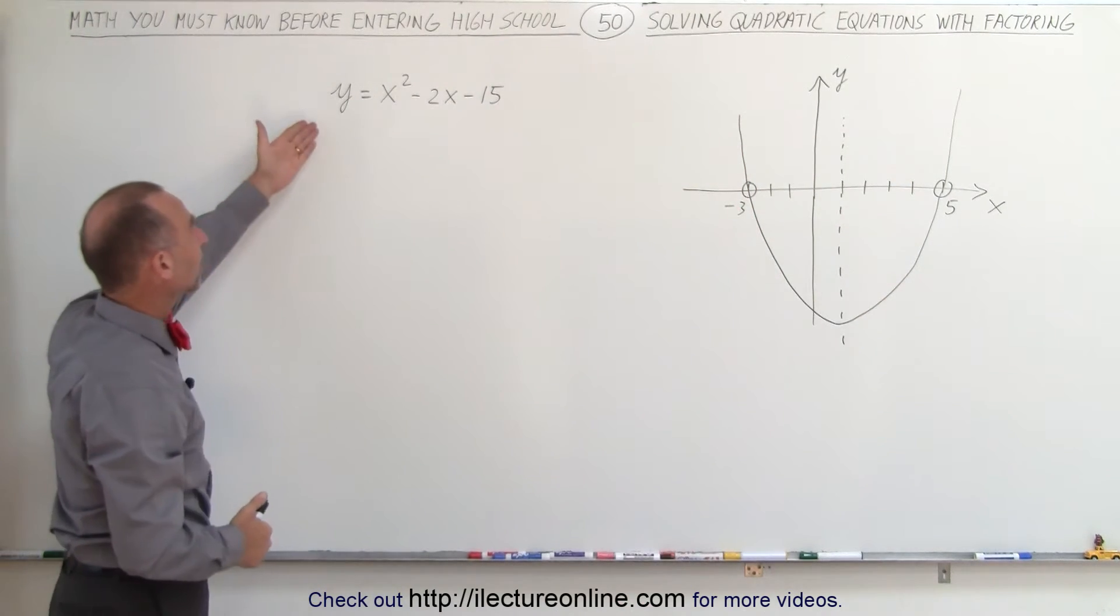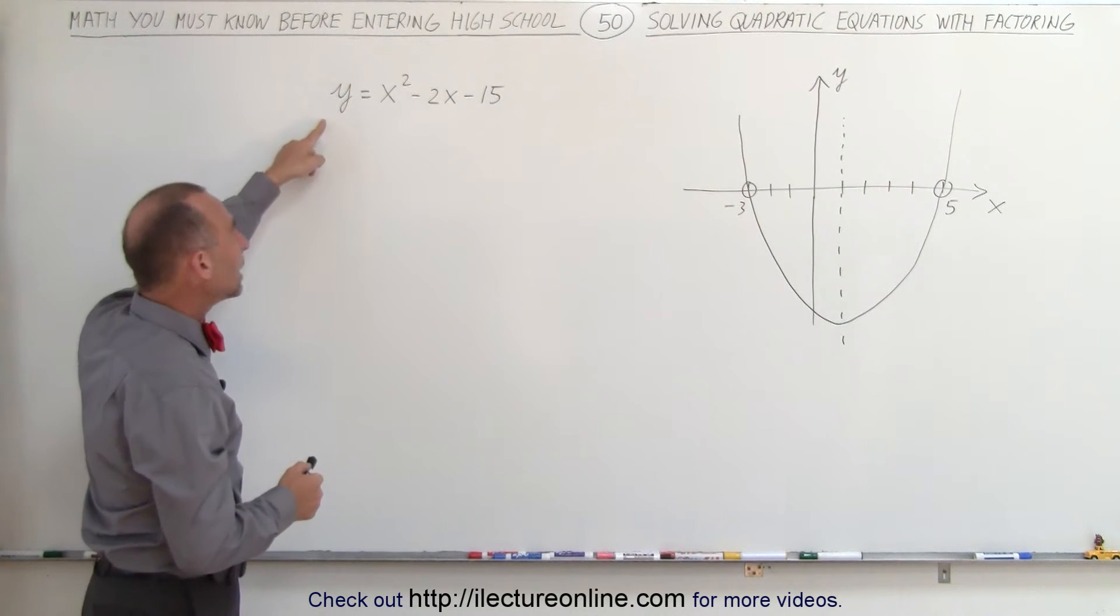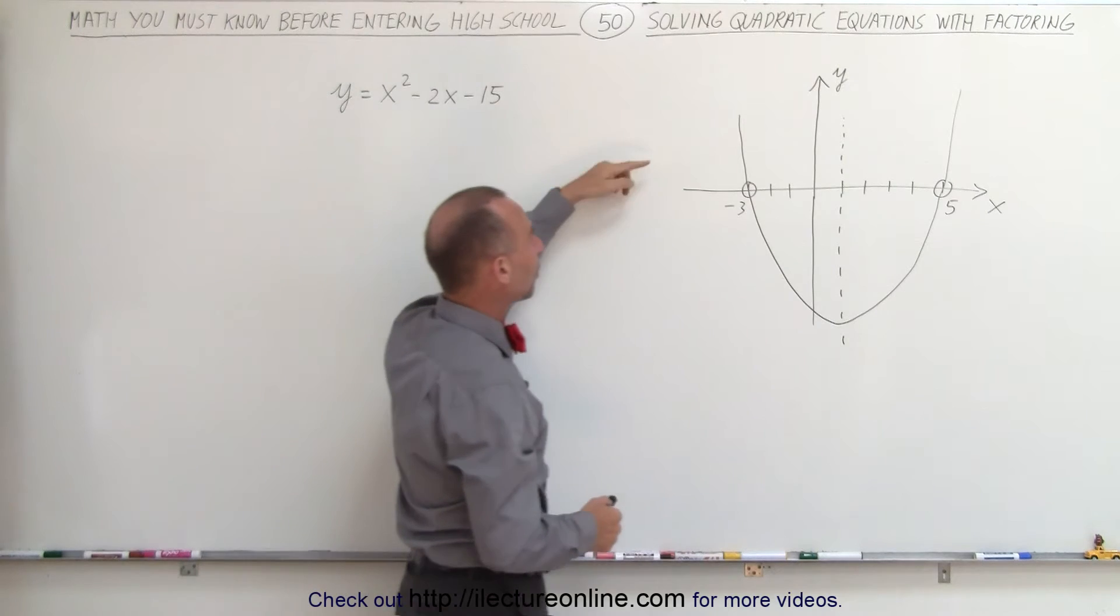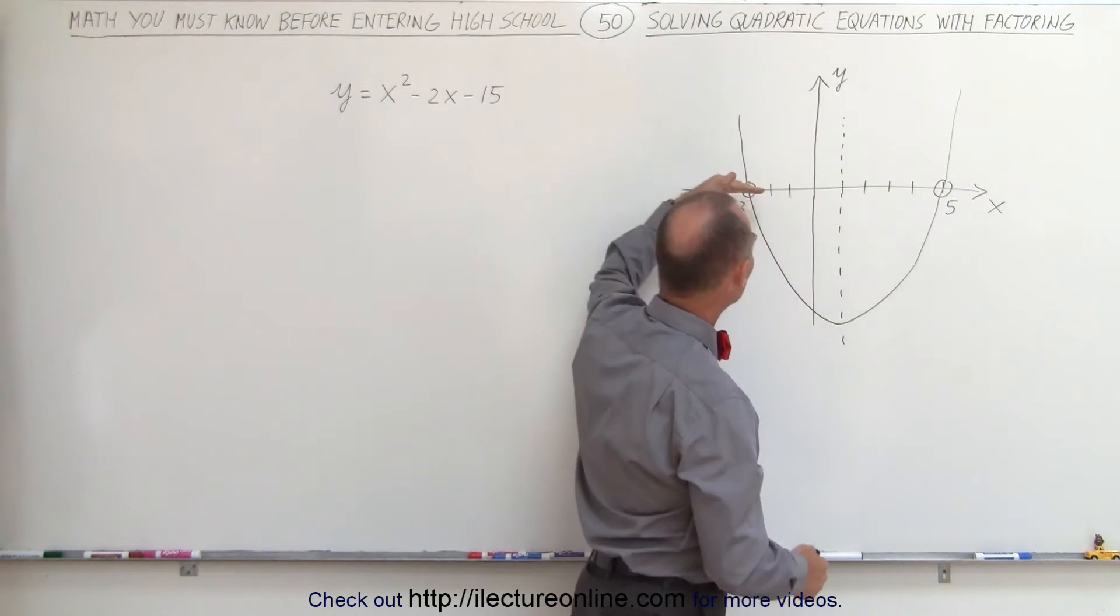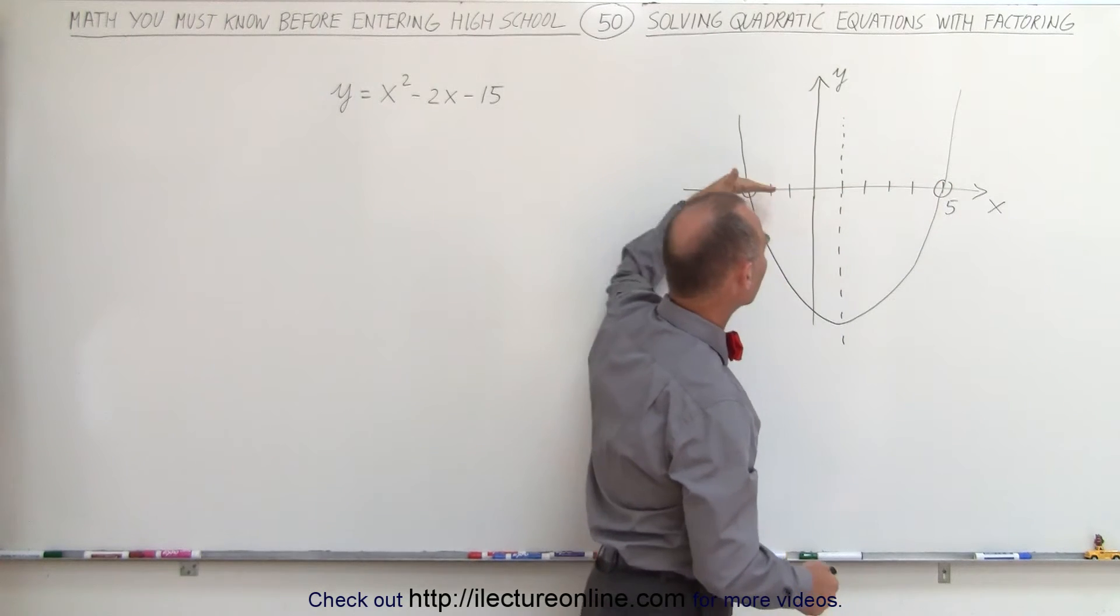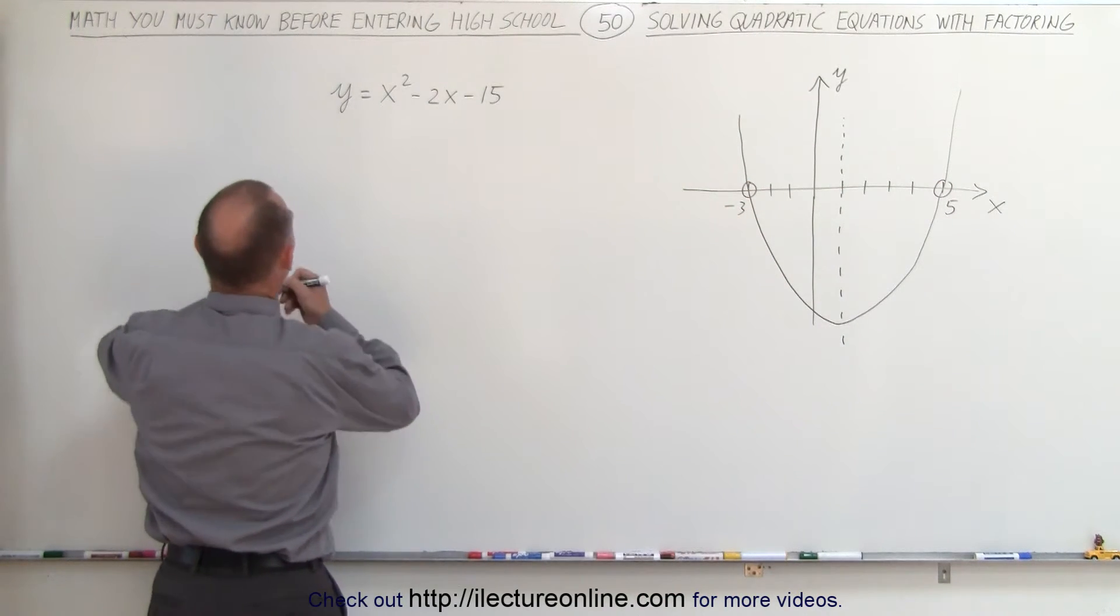So how do we do that with something like this? The first thing we do is set y equal to 0, because notice when the graph crosses the x-axis, that is at a point where y is equal to 0 because it is on the x-axis. So we're going to set y equal to 0.